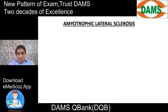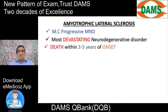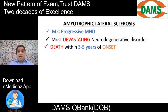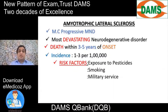ALS is the most common progressive motor neuron disease and one of the most devastating neurodegenerative disorders. From onset, the person succumbs within 3 to 5 years. The incidence is 1 to 3 per 100,000. Risk factors include exposure to pesticides, smoking, and military service.